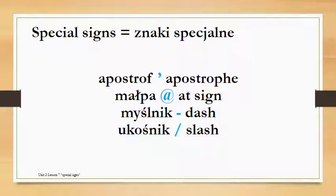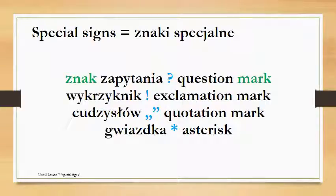Ukośnik more or less means just a line which is not straight. Next, a very important and commonly used one is the question mark, and this is also a really simple translation: znak zapytania. Znak means mark and zapytania basically means a question.